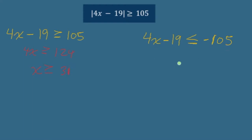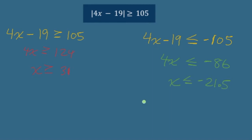Over on the right, same steps. Add 19 to both sides: we've got 4x is less than or equal to negative 86. Divide by 4 on both sides. If I can get x to be larger than 31, or if I can get it to be less than negative 21.5, then I will end up with values inside that are outside the allowed range.